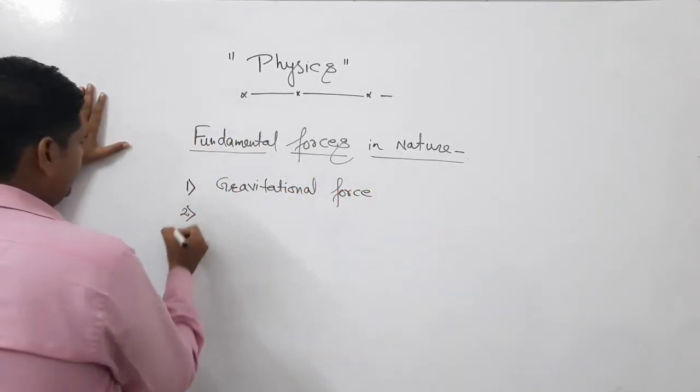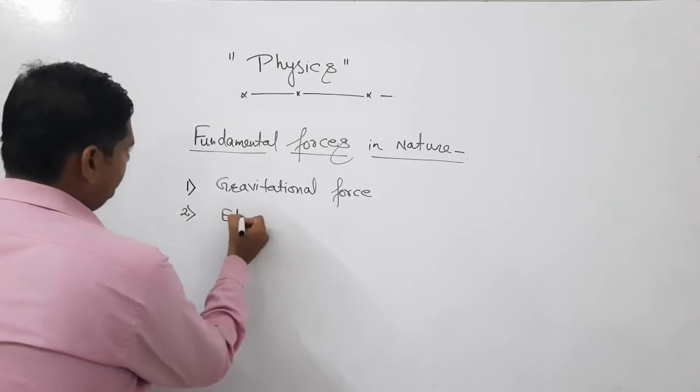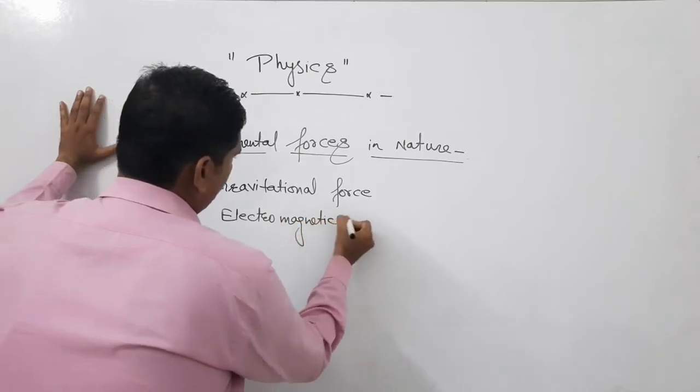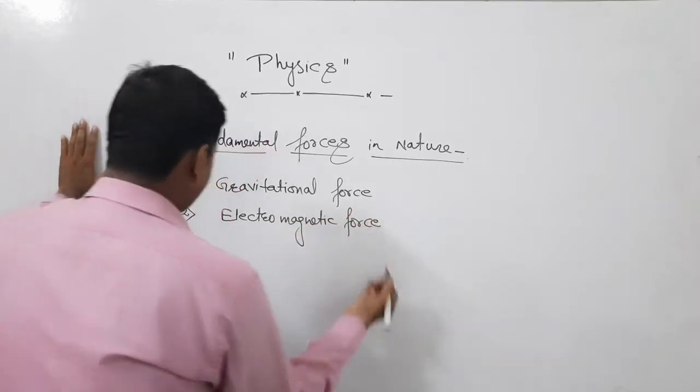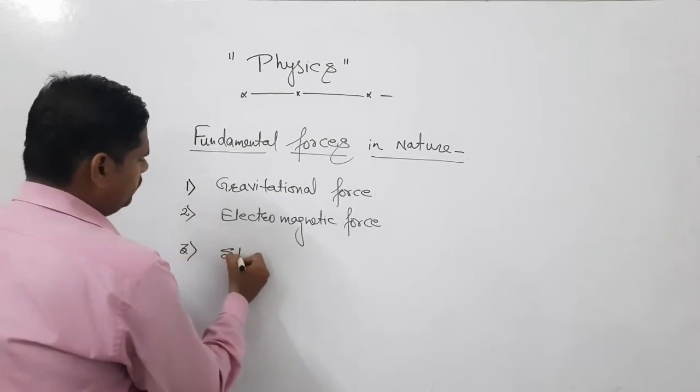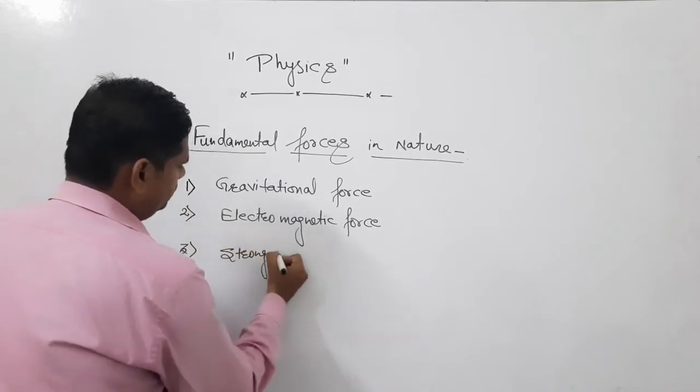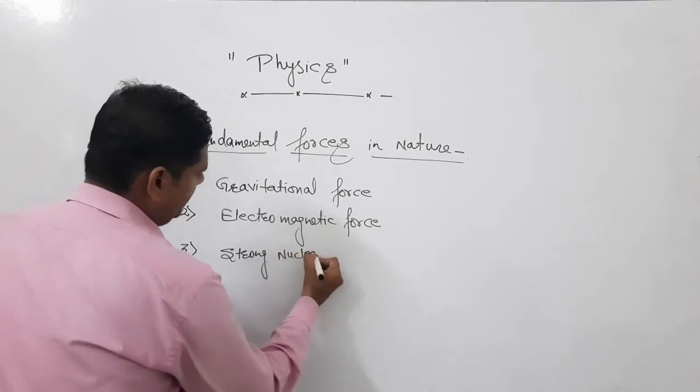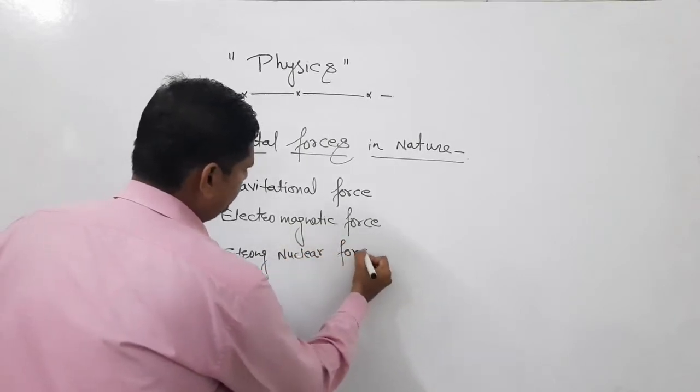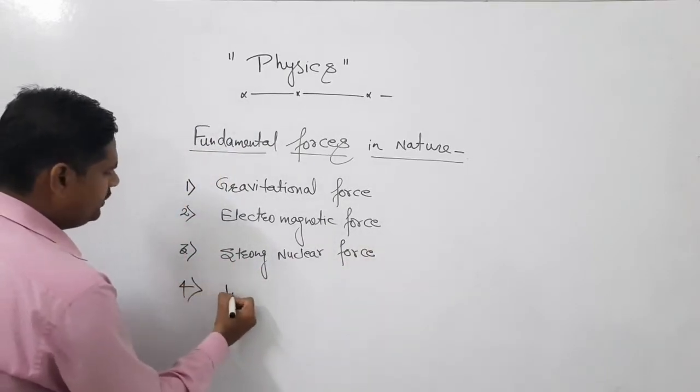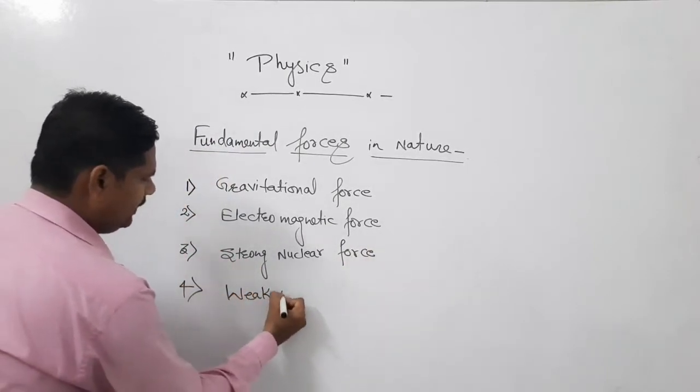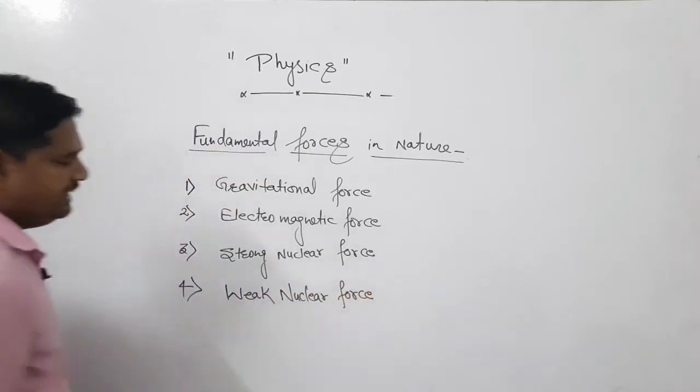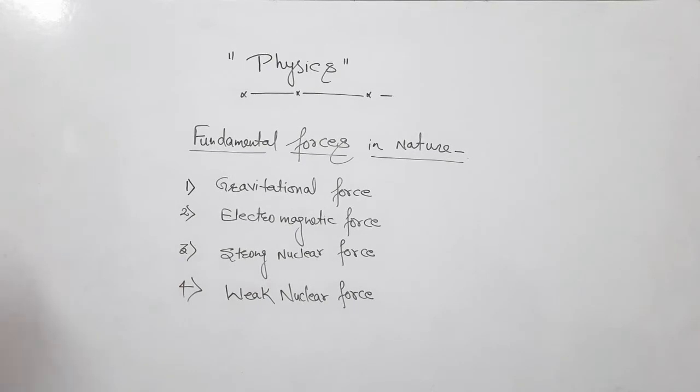Second one is electromagnetic force. Third one is strong nuclear force. And last one is weak nuclear force. These are basically four fundamental forces that exist in nature.